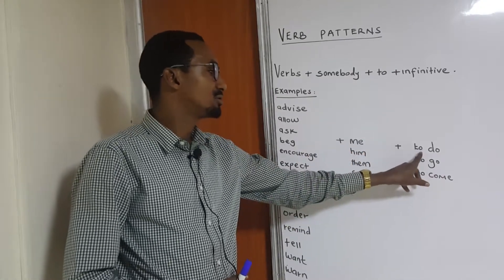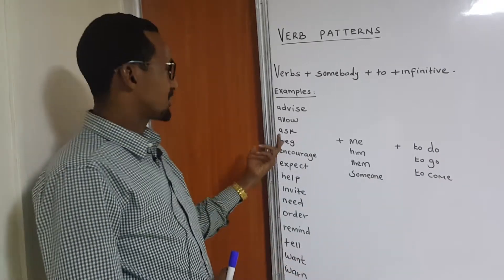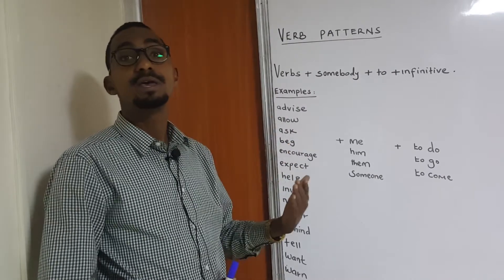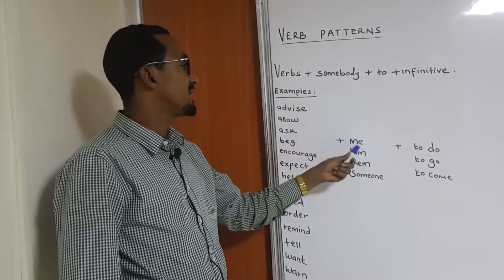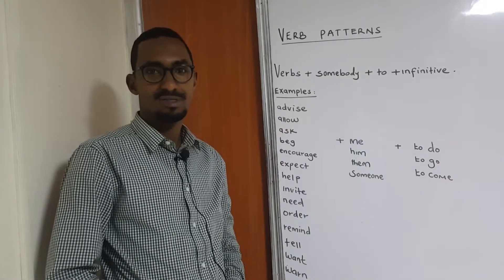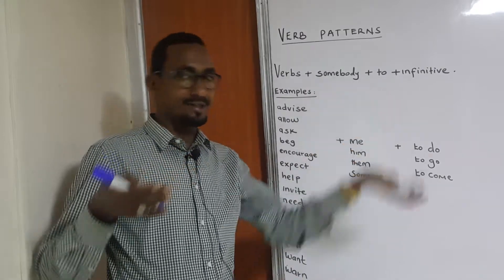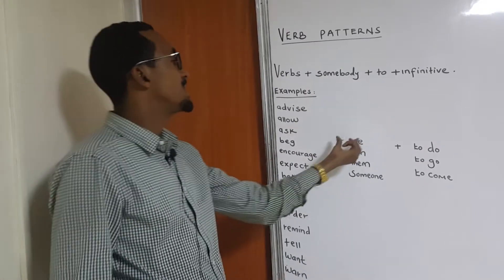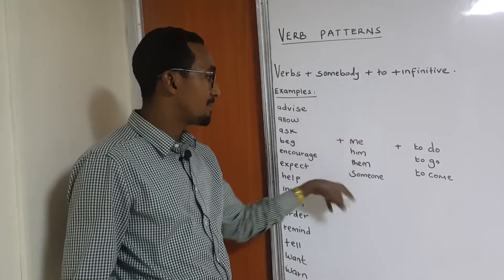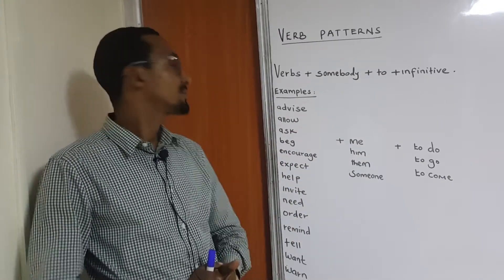Then from there we add: to do, to go, to come, and so on. So we can say, for example: 'He advised me to do the exercise.' Look at that — He advised me. If you don't add somebody here — me, him, them, or someone — then your sentence might not be right.